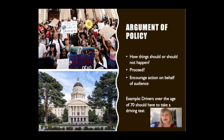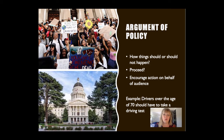The final argument type is one of policy. This is where the speaker debates how things should or should not happen, how they should proceed. The speaker is trying to encourage an action on behalf of their audience because they have convinced them about a law, policy, rule, regulation, or standard that potentially should be in effect and is not, or should not be in effect. For example, a former student gave a speech stating that drivers over the age of 70 should have to take a driving test every year to retain their license. Agree? Disagree?